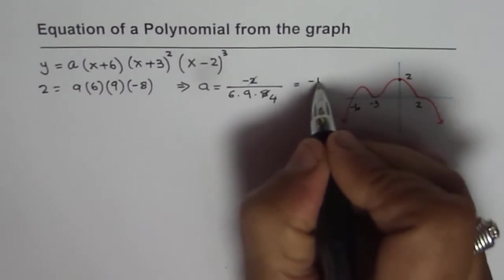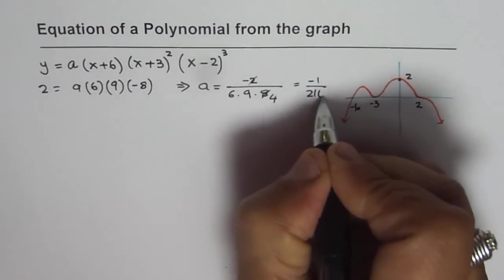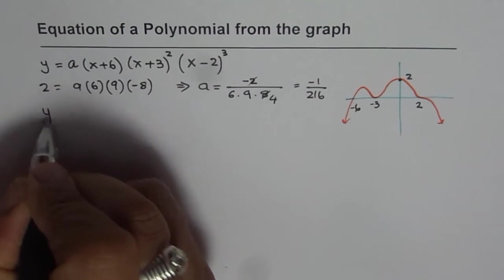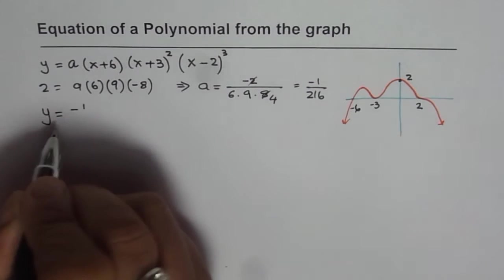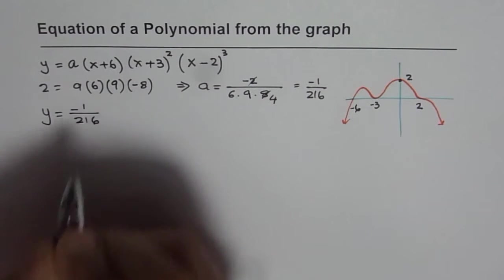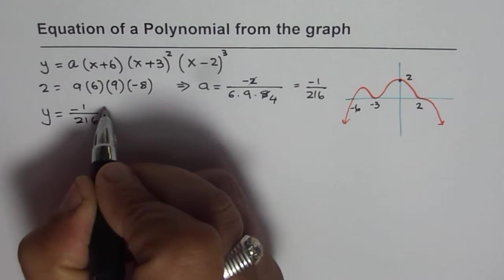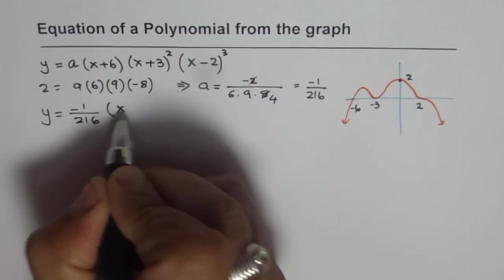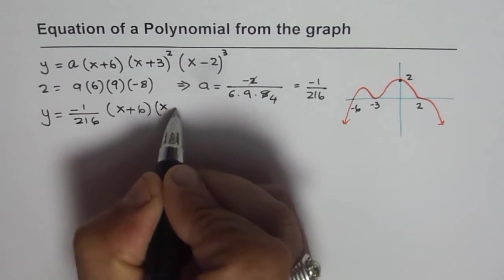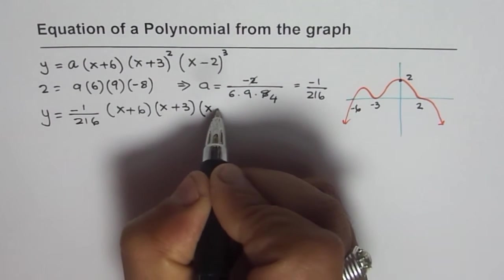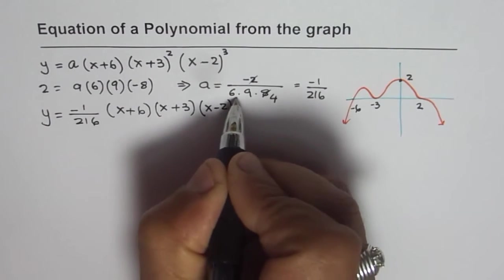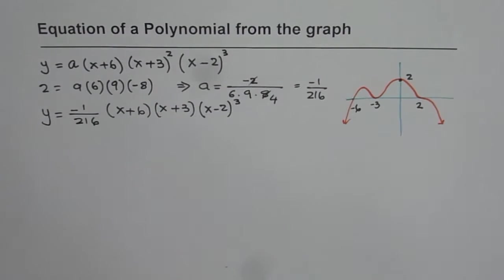So a is negative 1 over 216 and so this graph has an equation which is y equals to minus 1 over 216 and here we have x plus 6 times x plus 3 times x minus 2 whole cube. So that is how you can get equation of this particular function.